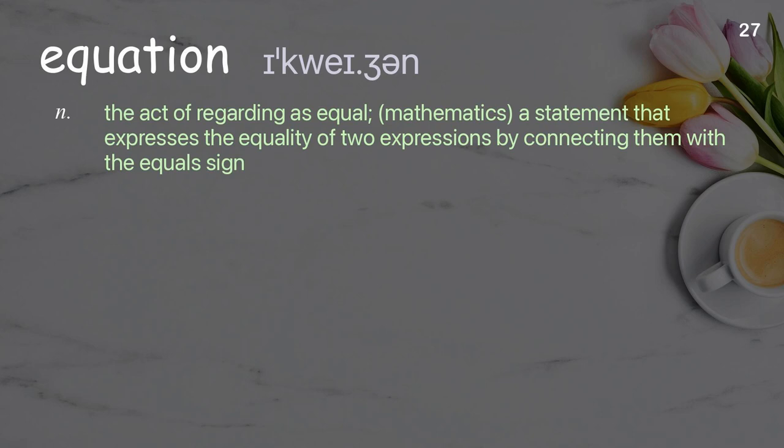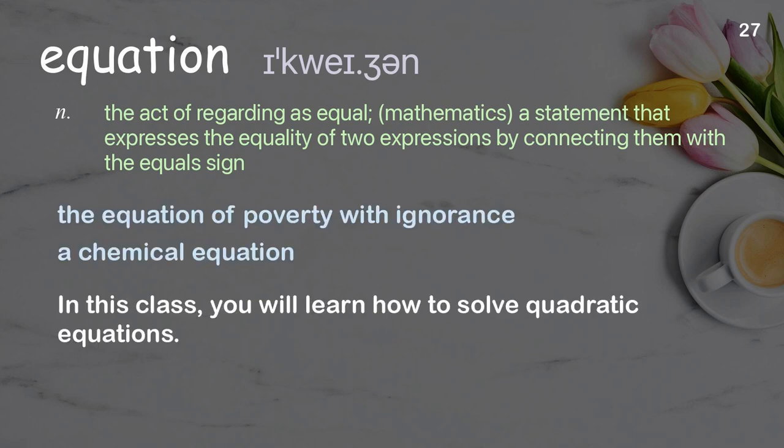Equation: the act of regarding as equal; in mathematics, a statement that expresses the equality of two expressions by connecting them with the equal sign. Examples: the equation of poverty with ignorance, a chemical equation. In this class, you will learn how to solve quadratic equations.